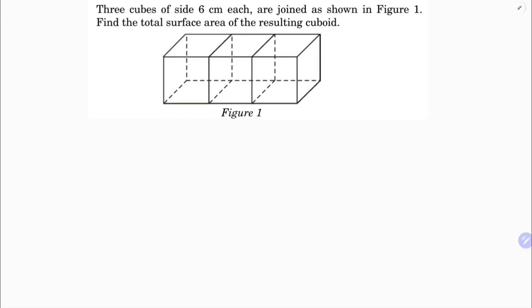Three cubes of side 6 centimeters each. The side of each cube is 6 cm, 6 cm, and 6 cm. The breadth is also 6 cm and the height is 6 cm.